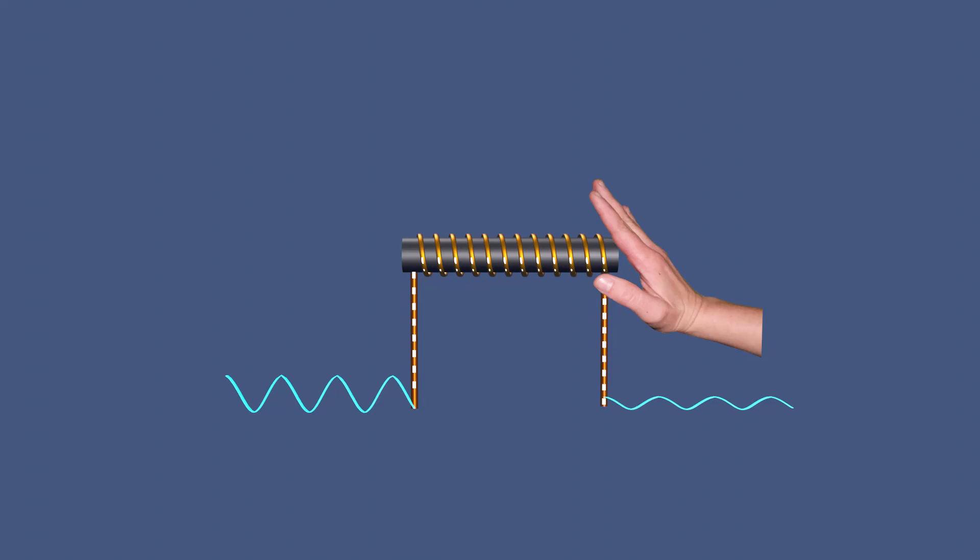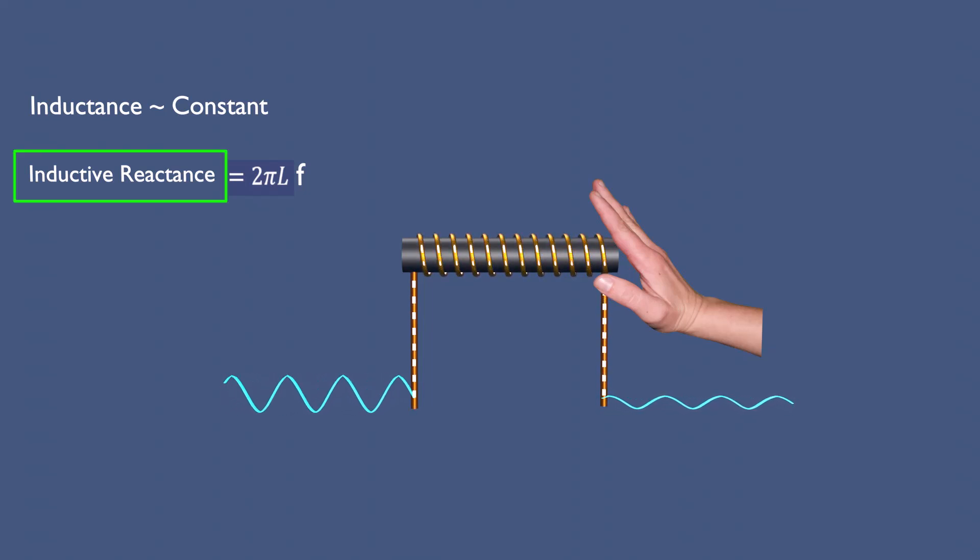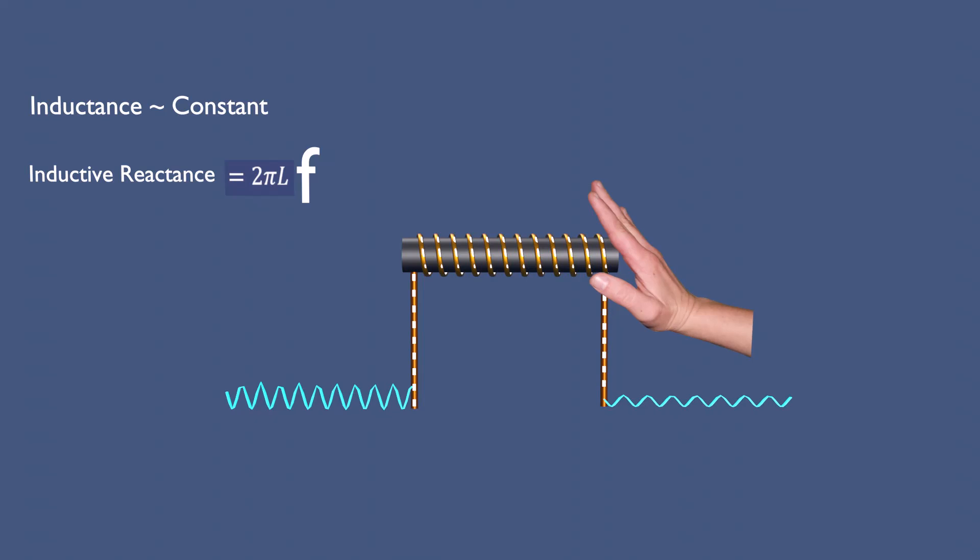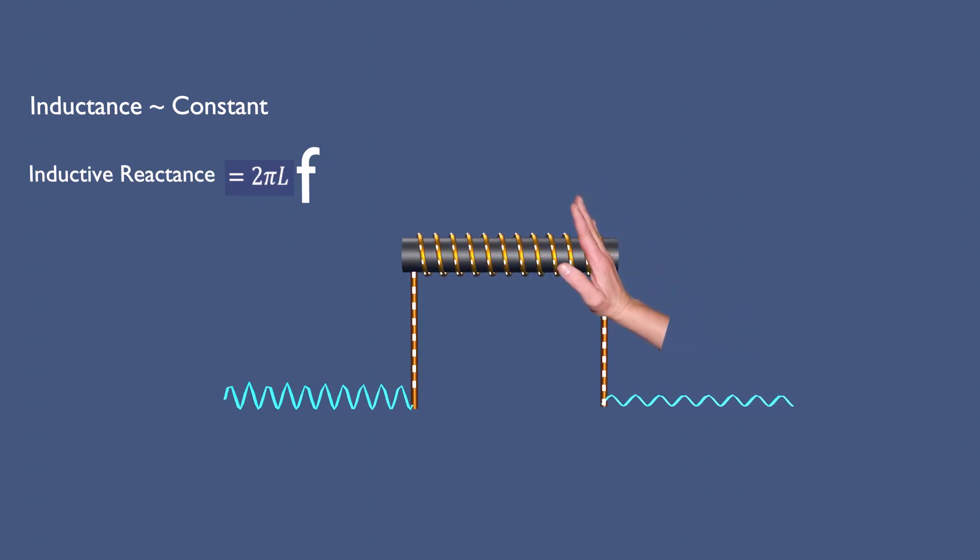However, in AC circuits, the inductor also presents a frequency-dependent opposition to the flow of current called inductive reactance. Unlike inductance, which is a fixed property, inductive reactance depends on the frequency of the alternating current. As frequency increases, the inductive reactance also increases, causing the coil to oppose the current more strongly.